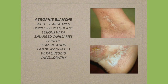Atrophe blanche — it's always a white, star-shaped, depressed plaque-like lesion. Sometimes these areas are quite friable and can bleed very easily. You can see this in patients who have a coagulopathy or vasculopathy of some sort — sometimes you'll see this in patients who do not have any venous insufficiency. It's a clinical sign that there may be something else going on and these patients may need a workup otherwise. Sometimes you'll see it once an ulcer is healed as a skin change as well.